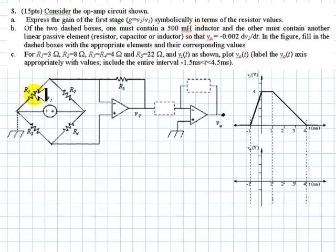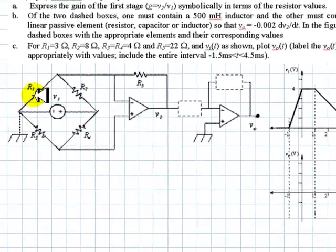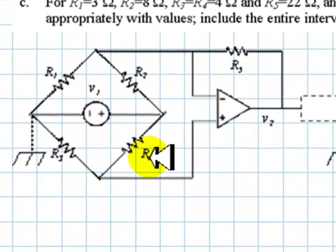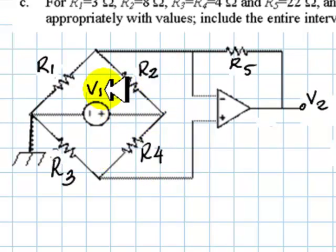So we need to find G = V2 over V1. This is V2 the output of this stage, and this is V1 the input. Let's work on this part. Well I can barely make those little subscripts. Let me rewrite them better like this.